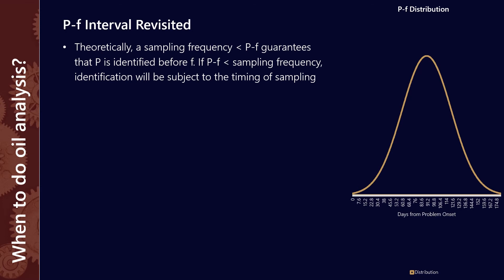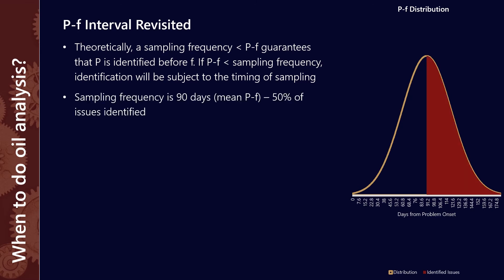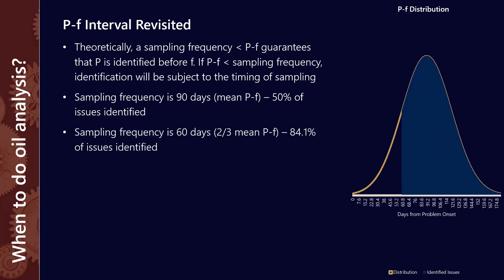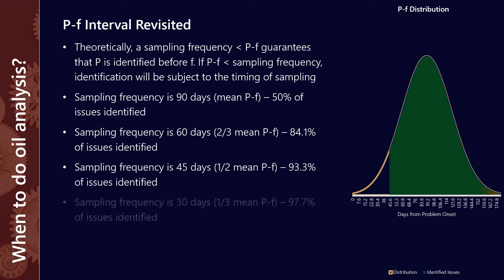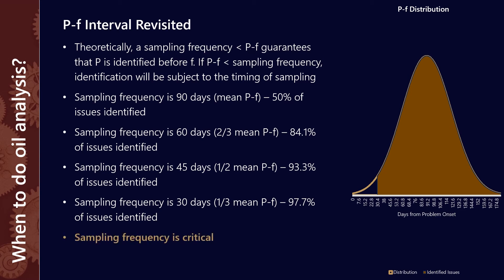As we vary the sample frequency, we can catch more or less of these failures. If we had a sampling frequency less than the mean P to F interval, that theoretically means we should catch at least 50% of all failure modes. Reducing our sampling frequency to 60 days would catch a minimum of 84%, 45 days would be 93%, and 30 days would be almost 98%. The sampling frequency is really critical to the success of your used oil analysis program.